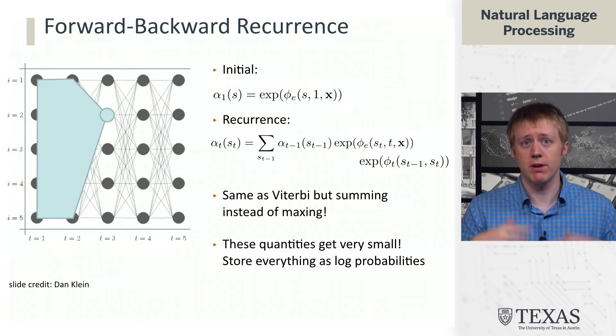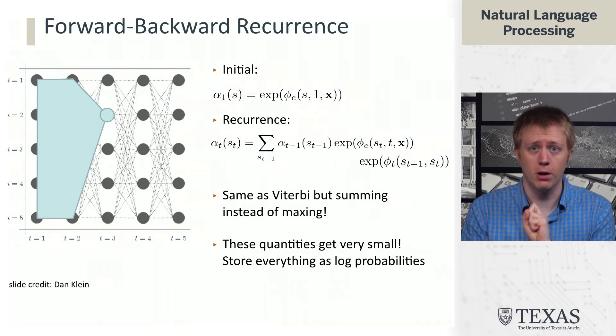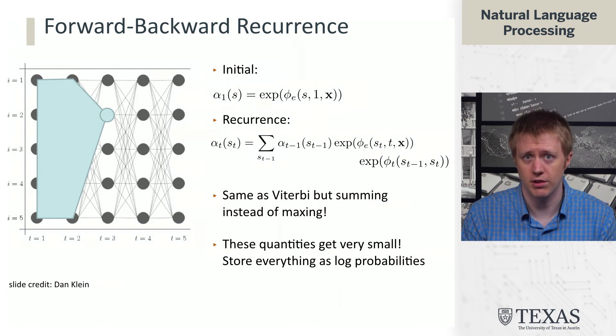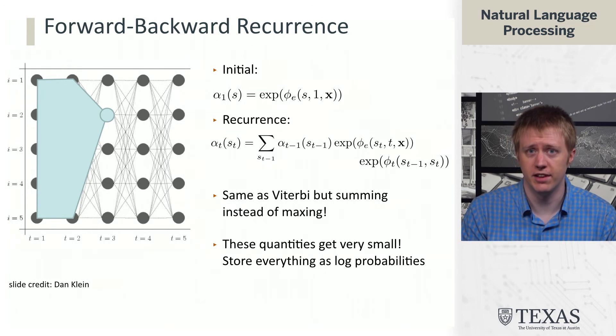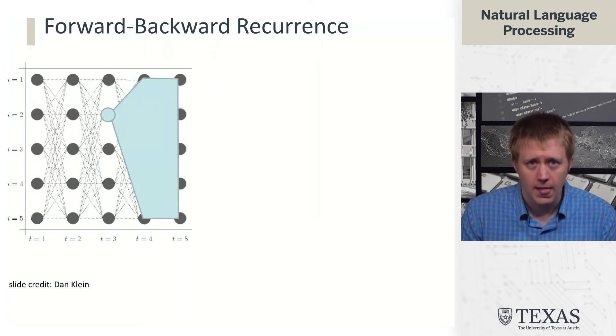And so I'm showing this in kind of real probability space, but just like with Viterbi where we implemented everything in terms of log probabilities, we want to do that here as well because otherwise the probabilities get very small and you risk underflowing when you have long sentences. Although typically for NER you don't run into that problem so much. You can usually kind of get away with doing it in real space.